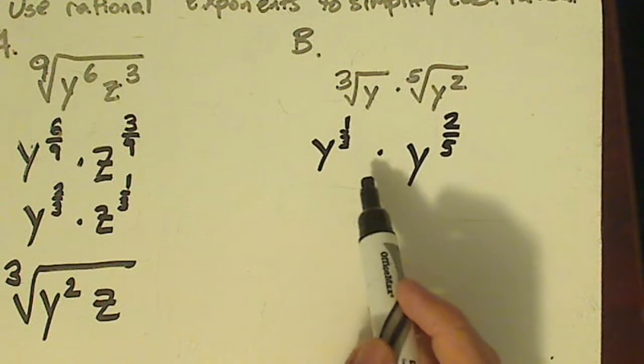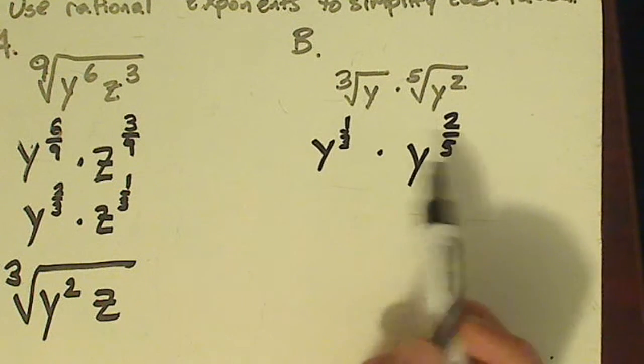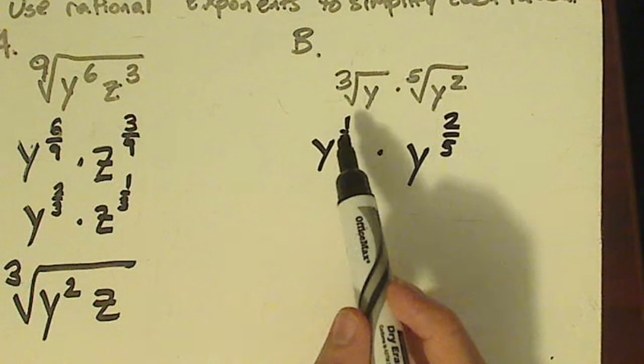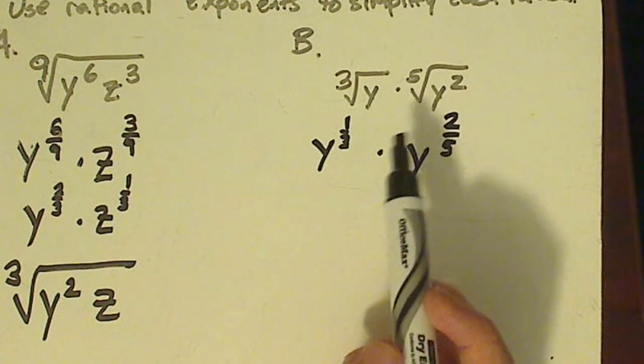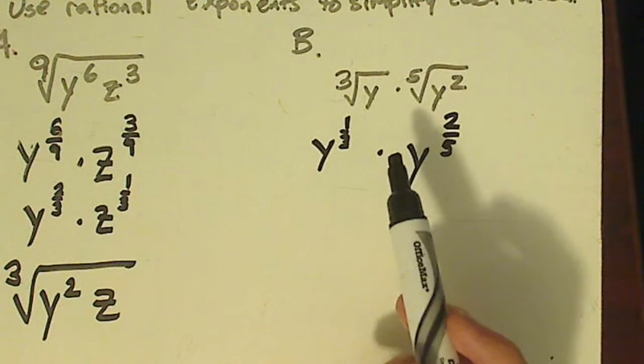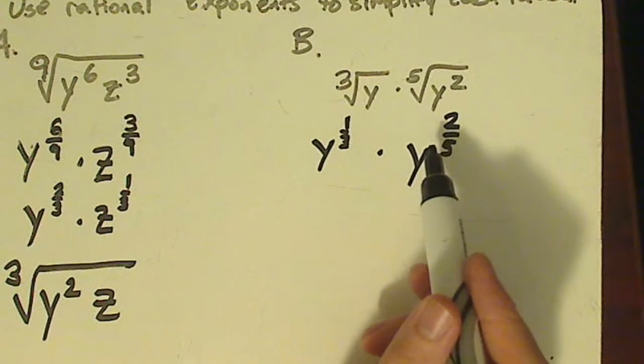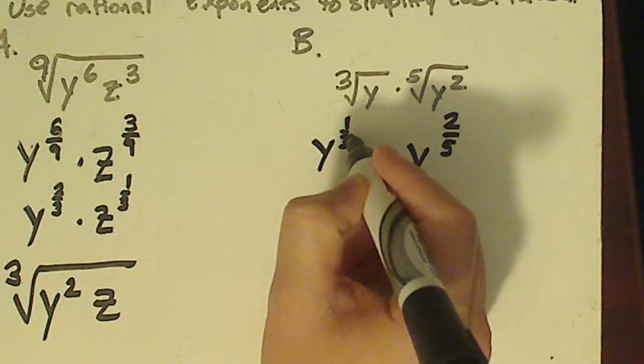Now when you're multiplying exponents that have the same base, you need to take those powers and add them together. But with fractions, I can't just add them together. I have to find the LCD. The LCD of three and five would be fifteen.